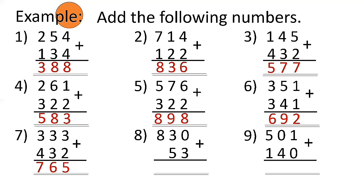Number 8: 830 plus 53 — 0 plus 3 is equal to 3, 3 plus 5 is 8, and since there's no more number to add to 8, just bring it down. So the answer is 883. Number 9: 501 plus 140 — 1 plus 0 is 1, 0 plus 4 is 4, and 5 plus 1 is 6. So the answer is 641. It's easy, right? Don't forget to add in ones place, then tens place, then hundreds place.